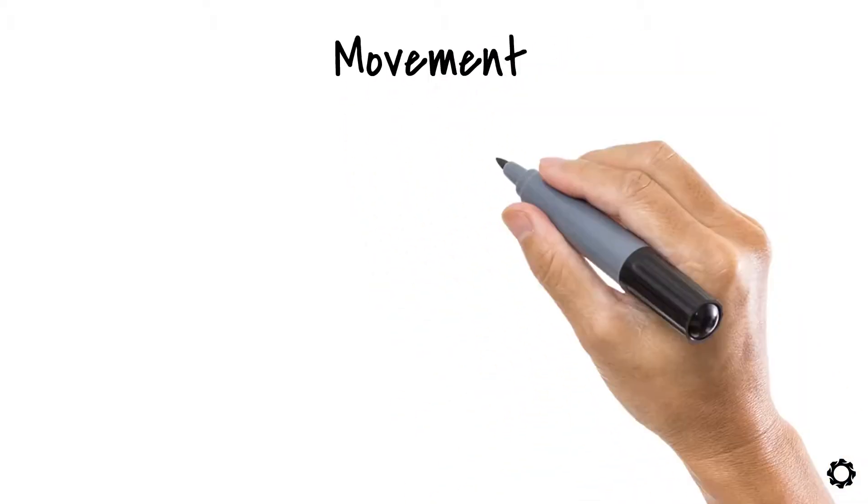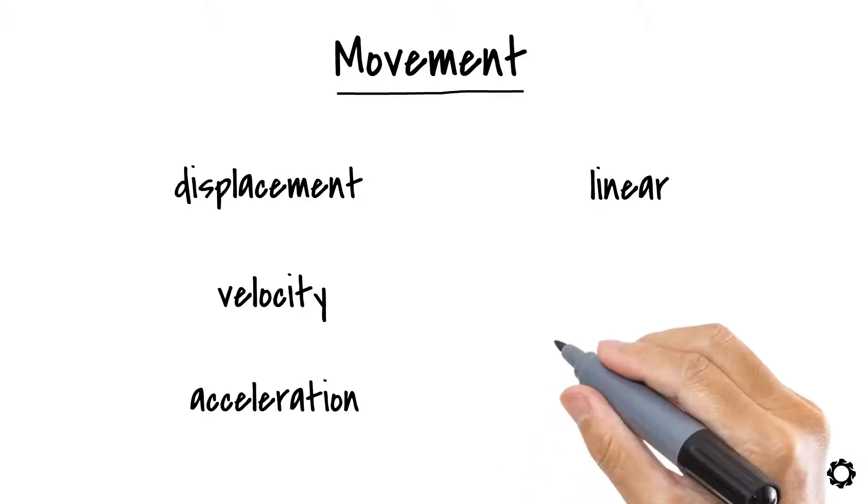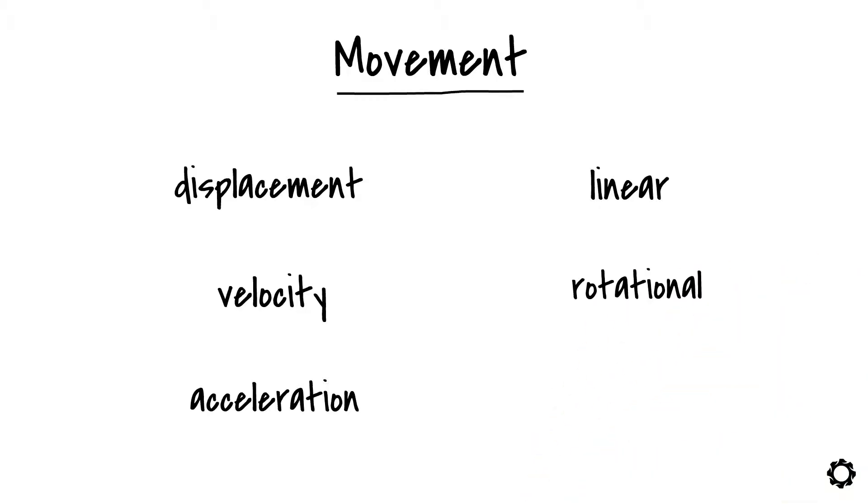And the last one, but not the least, movement. Movement for our case can be in the form of a displacement, a velocity or an acceleration. They can be linear if the part is only translating, rotational if the part is purely rotating and complex if the part moves with a combination of translation and rotation.